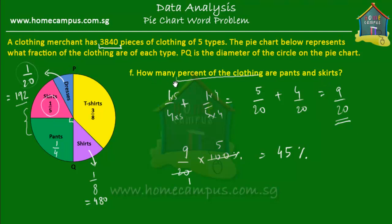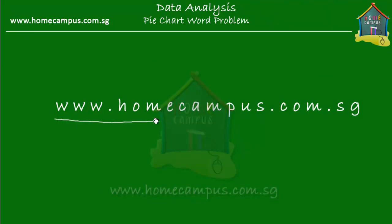You can also verify this using actual numbers: find one fifth of 3,840 for skirts and one quarter of 3,840 for pants, then calculate what percent of the total they represent — you should still get 45%. I hope you understood what was taught. Go back and practice questions and take quizzes at www.homecampus.com.sg. Practice makes perfect. This is Em signing off. Bye-bye.